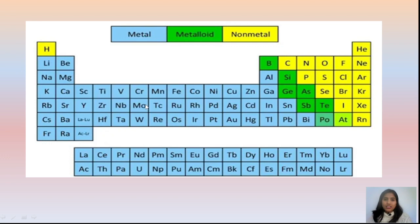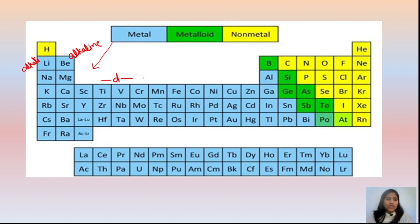If you talk about the periodic table and someone asks how many total metals and non-metals there are, we can tell from the periodic table. The first group is alkaline metals, and the second is alkaline earth metals. Then we have the D-block, which are transition metals, also called transition elements.